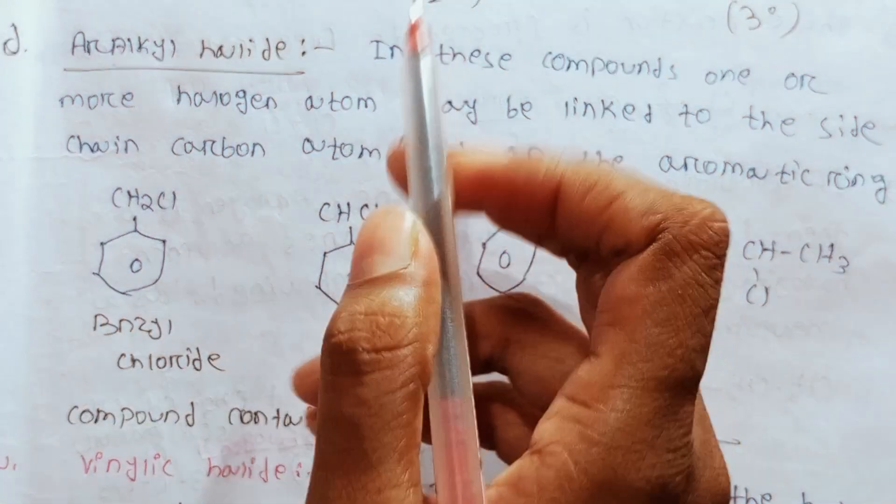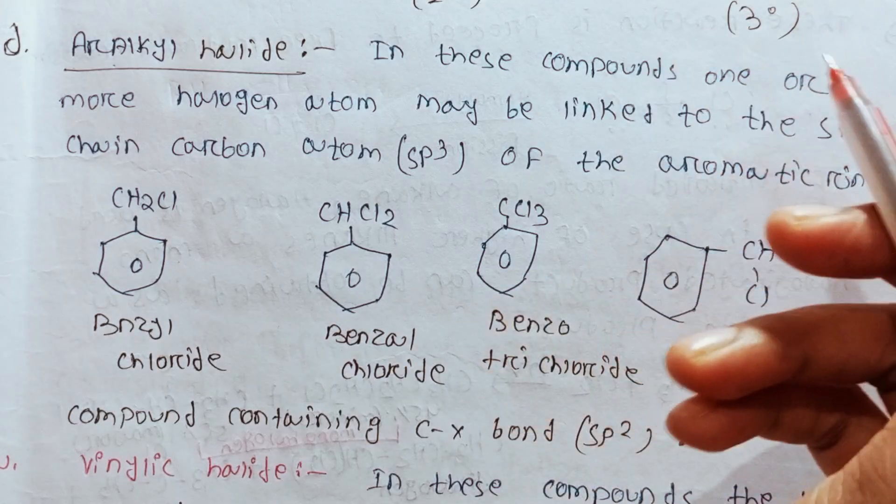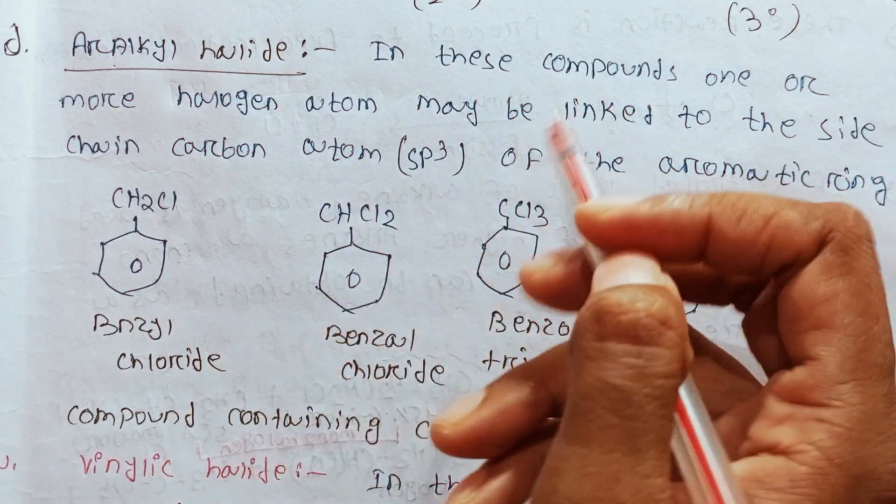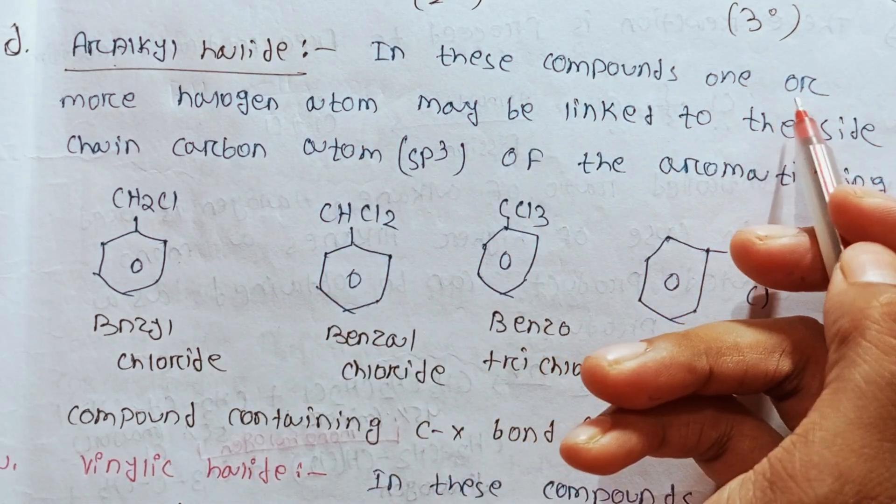So r-alkyl halide — the halogen atom in r-alkyl halide has carbon-saturated hybridization.